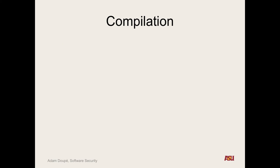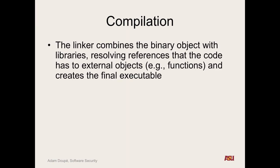Now we have the binary object — we need to link different binary objects together into one final executable and resolve all the references. It's not until the linker stage that we discover if you're calling a function that's never defined. The Linux linker is LD. That's why when you compile a C file and use an undefined function, you'll get an error from LD in the output — your program compiles and assembles fine, but it can't create a final executable because you're calling a function that doesn't exist.